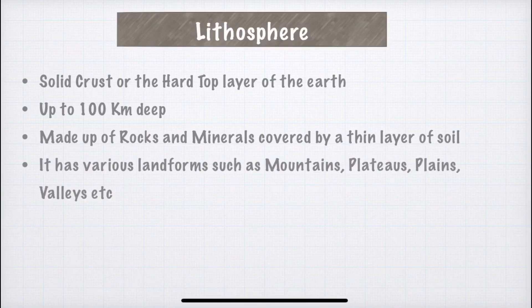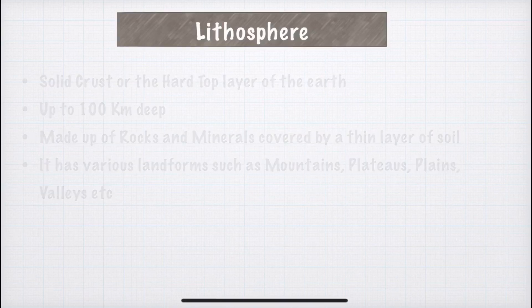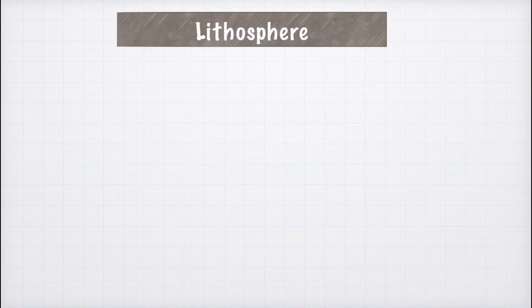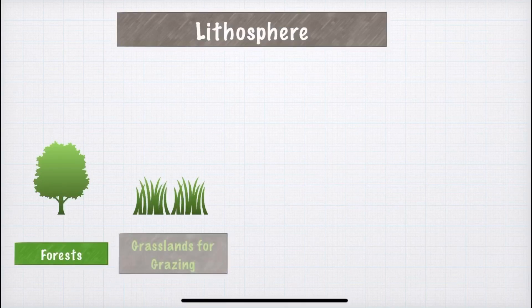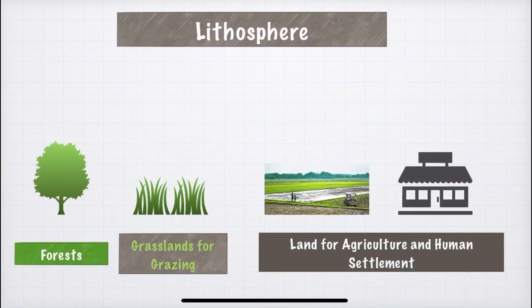Lithosphere has various landforms such as mountains, valleys, plains, and plateaus. For example, in India we have the Himalayan mountains, the Deccan plateau, and the northern plains. Lithosphere is important because it provides us forests — which are important for oxygen, shelter, and as home to animals. It also provides grasslands for grazing animals like cows, and land for agriculture and human settlements such as houses and shops.